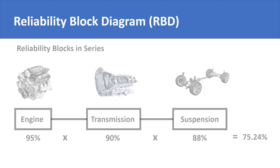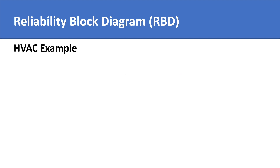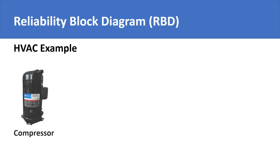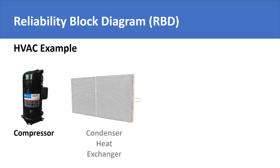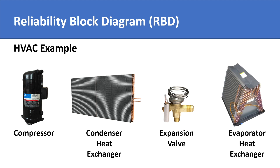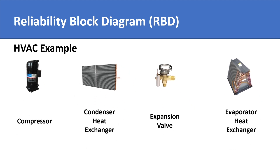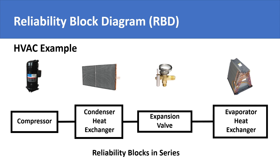Now consider an HVAC system. It comprises a compressor, condenser, expansion valve, and evaporator. These components by design have a series configuration because the HVAC system will fail if any one of these components fails. The resultant or combined reliability of the system will be the product of the reliability of each of these individual parts.